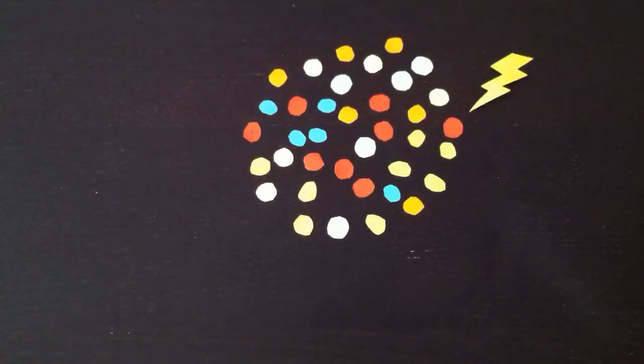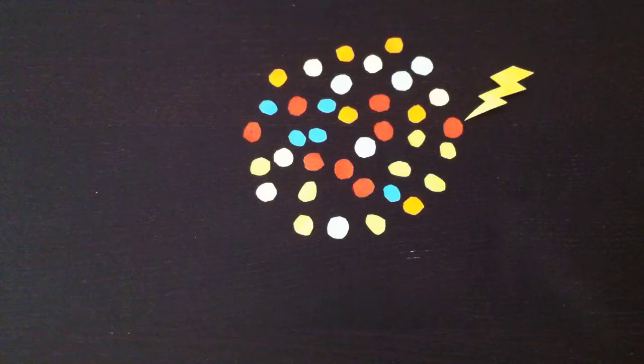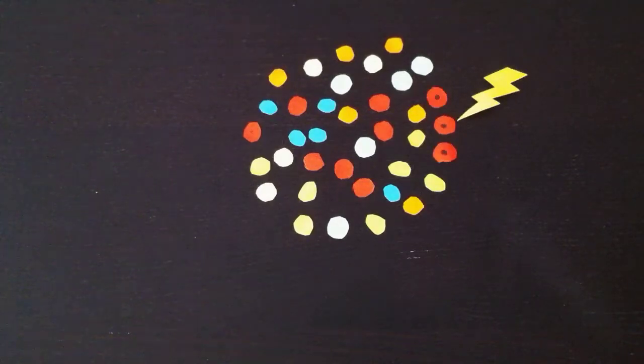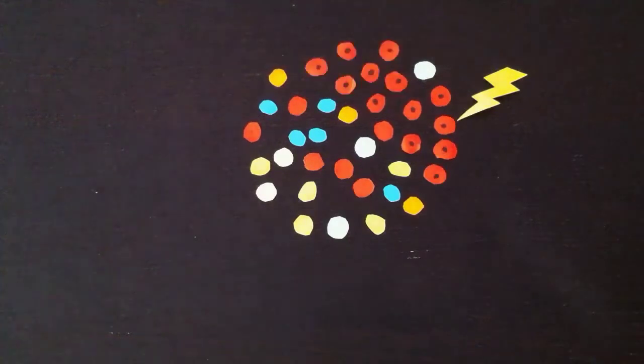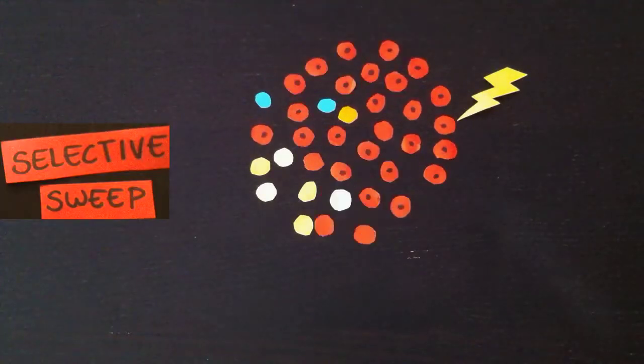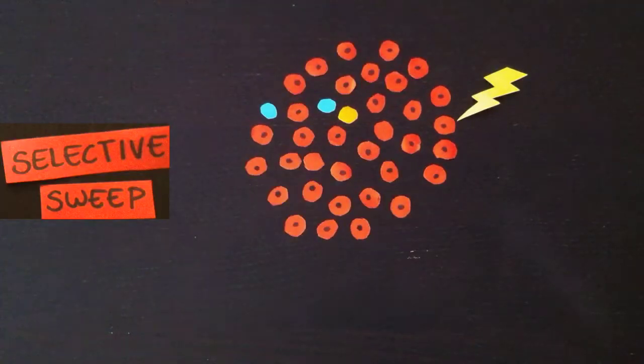Imagine a population with a certain amount of genetic diversity. In this population, a mutation may occur that confers a fitness benefit to the virus. This mutation, and with it the genetic background it arose on, may then rapidly increase in frequency in the population and thereby sweep away genetic variation.